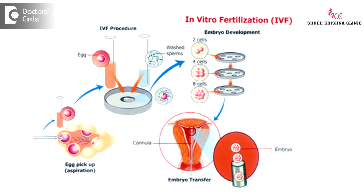Regarding uterine problems — septum, polyps, adhesions, or tuberculosis in the uterus can be corrected either through drugs or through surgical correction. Very rarely, the uterus will not be able to accept the baby; that is called recurrent implantation failure. Fertilization is happening — sperm and ovum are joining — but they are not able to get embedded in the uterine lining.